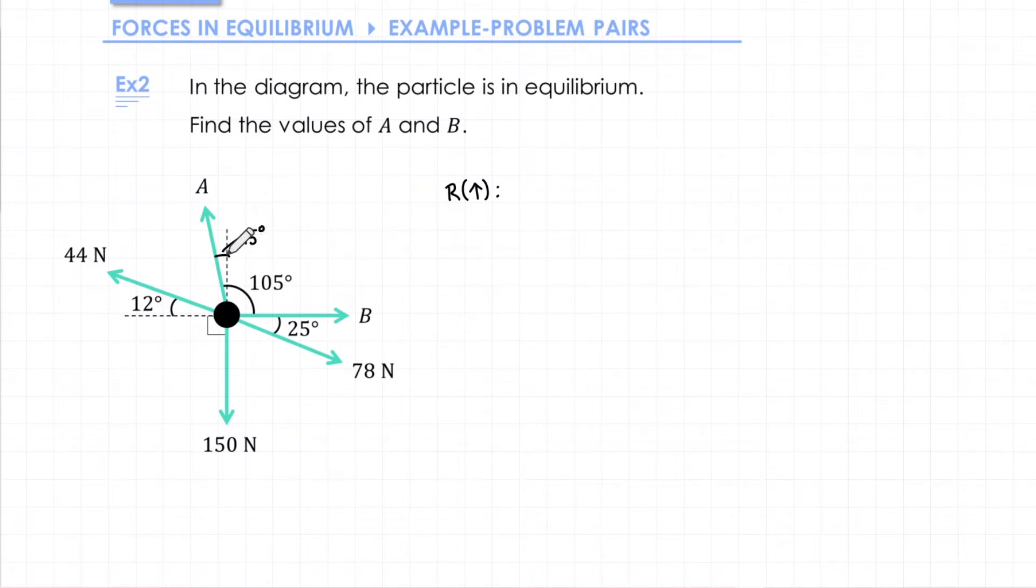It's worth noting that finding this angle is not the only way of solving this problem. We could instead have found the angle on the other side of 75 degrees and worked with that angle instead. So let's consider the component of force A in the upwards direction. We're crossing the angle so we're going to use cosine so we get A cos 15. We've also got a component of the 44 newton force acting upwards. This time we're not crossing the angle so that will be sine. In the opposite direction we've got 150 newtons acting straight downwards so minus 150. We've also got a component of the 78 newton force. We're not crossing the angle so this one will be sine. There's no acceleration so the right hand side is zero.